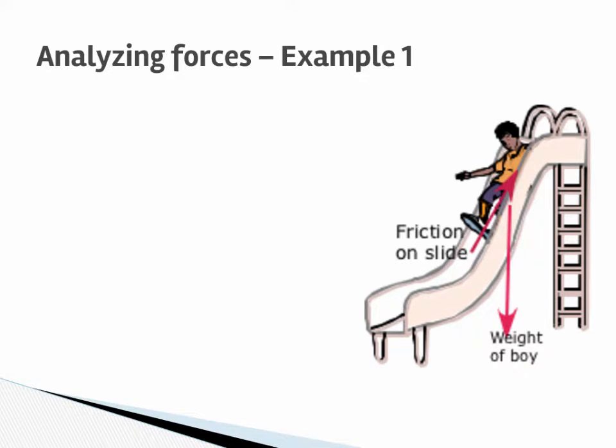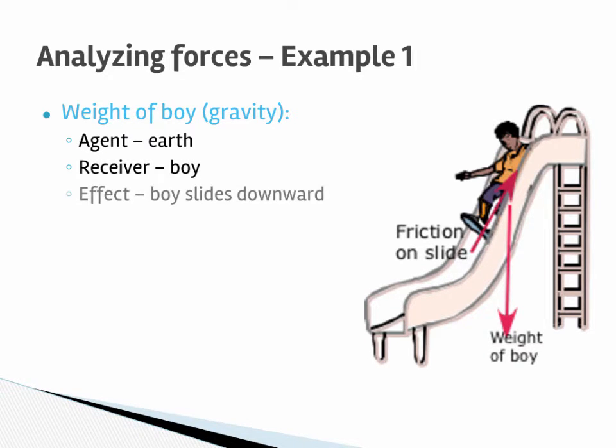So in this example you have two forces: a weight force and a friction force. The weight force is the weight of gravity. The agent is the earth, the receiver is the boy, and the effect is it pulls the boy down.